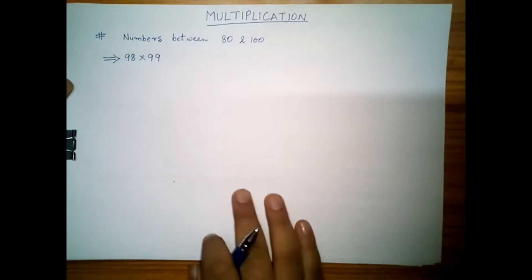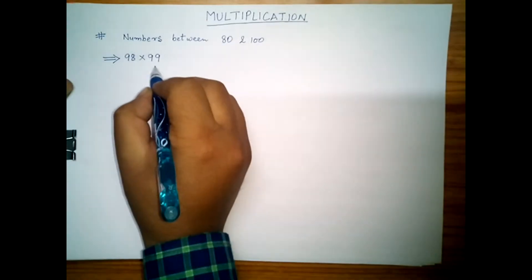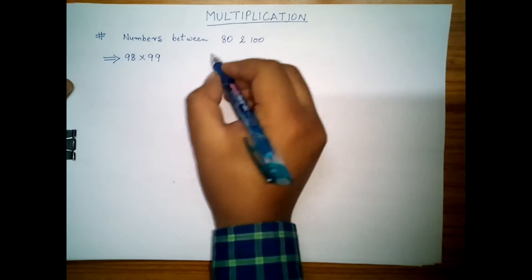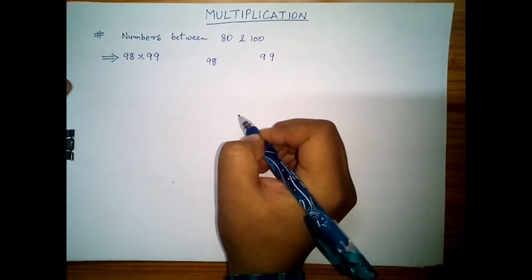What will be our first step? Find the difference between the two numbers from 100. For example, we have 98 and 99.